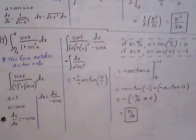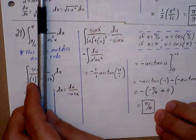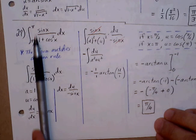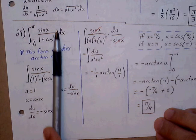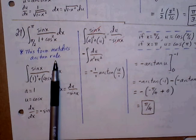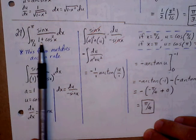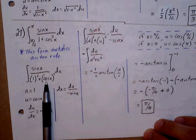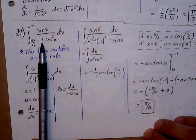Problem 29: another definite integral — sine(x) over (1 + cos²x) from π/2 to π. If you look at this, it actually matches up nicely with the arctangent rule. We don't see the square root, and we can split the denominator into a² and u². The cosine is already set up as cos²(x), and the 1 is simply 1².